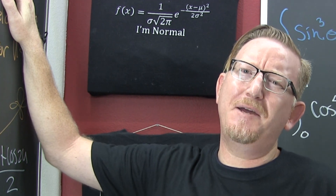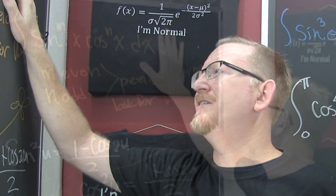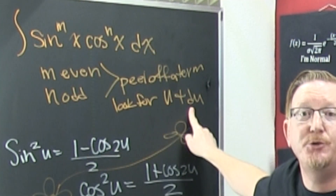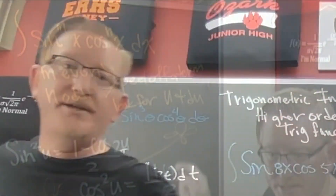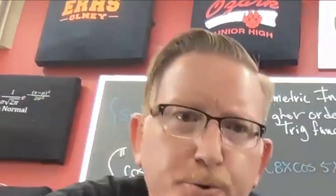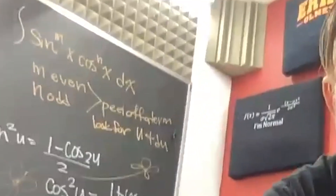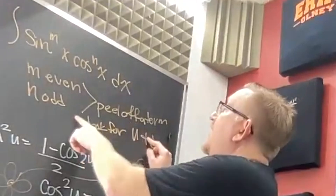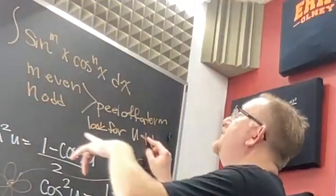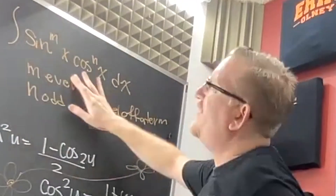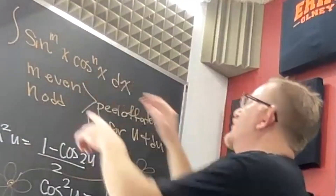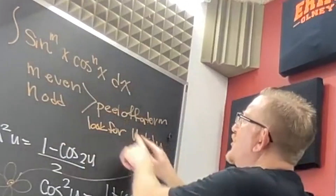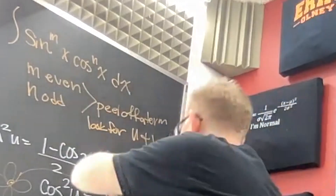What you're trying to do is manufacture a u-du situation. If m is even or if n is odd, you're going to want to peel one off so that you can look for a u-du.